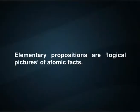Wittgenstein assumes that if we can use language to talk about the world, there must be some propositions directly connected with the world so that their truth or falsity are not determined by other propositions but by the world. These are called elementary propositions. Thus, elementary propositions are logical pictures of atomic facts. These facts cannot be further analyzed into more basic propositions.